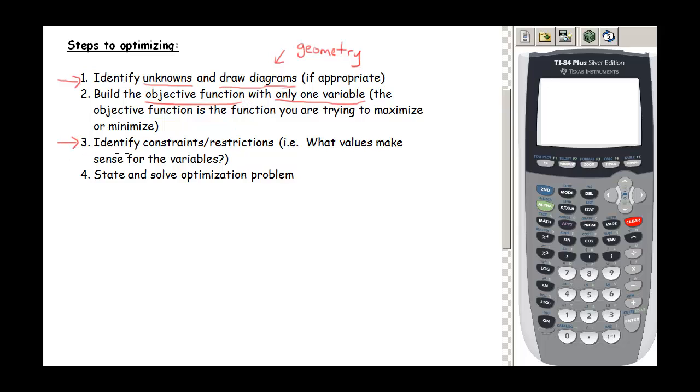Next, we're going to identify the constraints or restrictions. So what values make sense for these variables? So remember, with the extreme value theorem, we're only guaranteed that absolute max and absolute min when we have that closed bounded interval. Part of our process is going to be to figure out what is the interval where this particular objective function makes sense?